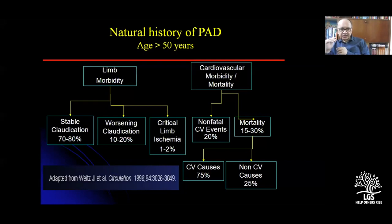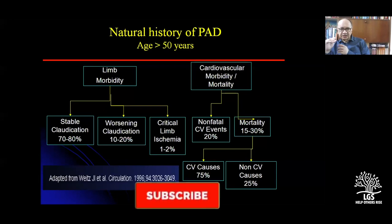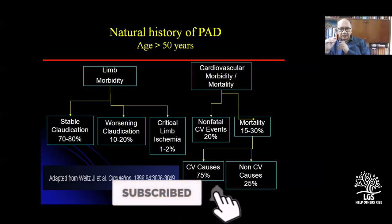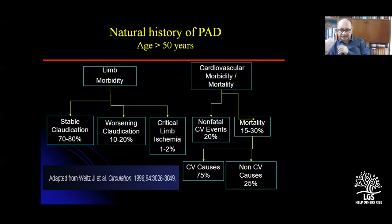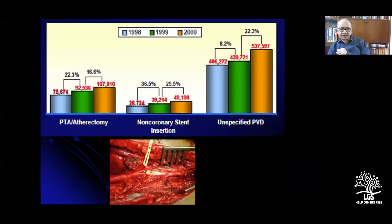It was found that fortunately the natural history of PAD progresses in only 10% of patients; others do not require surgery most of the time. The volume is rising — atherectomies and coronary stents are in the higher insertion category, while unspecified PVDs and diabetes are in the lower.